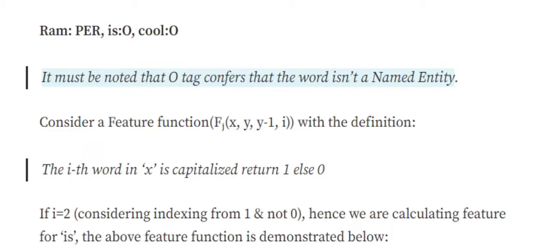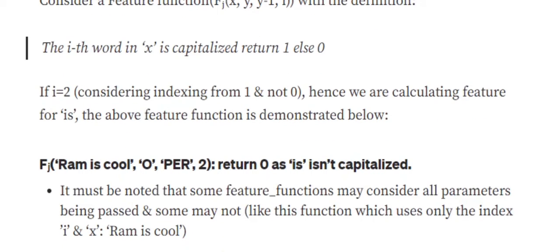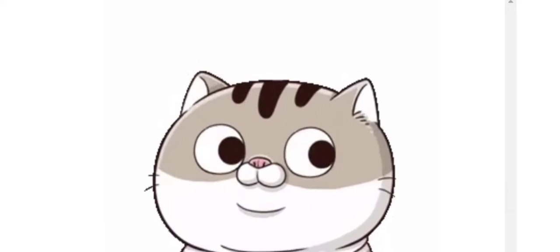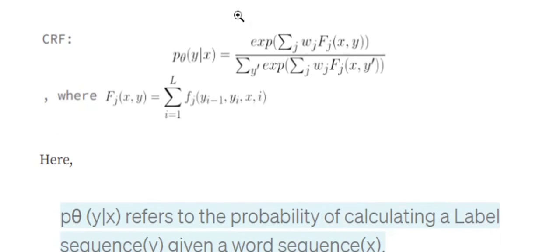The signature would look like: x = 'Ram is cool' (the sentence), y = the current word's tag we are trying to predict, y_minus_1 = the tag of the previous word, and i = 2 (the index). Now let's understand the main equation used in CRF. The probability of y given x equals exponential of summation over j of (w_j * F_j(x, y)), divided by a denominator.